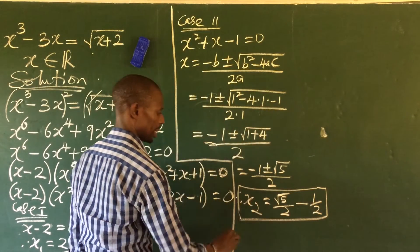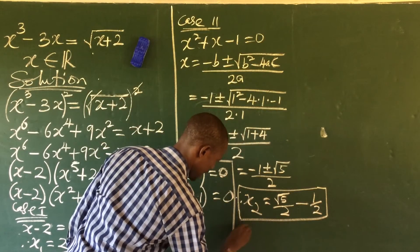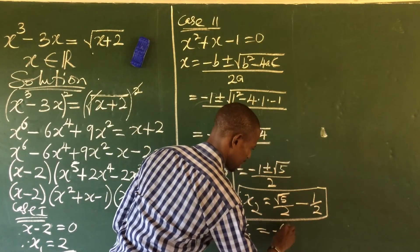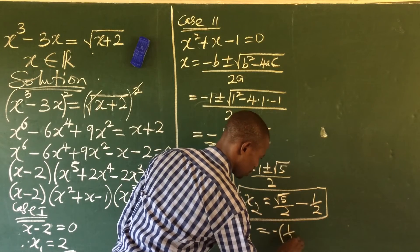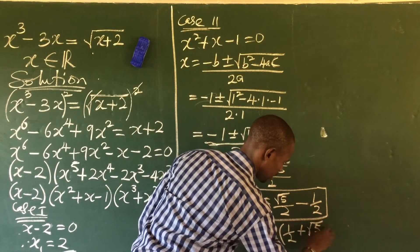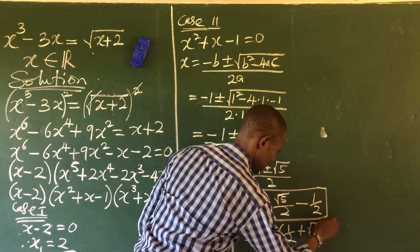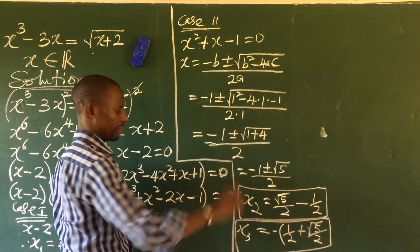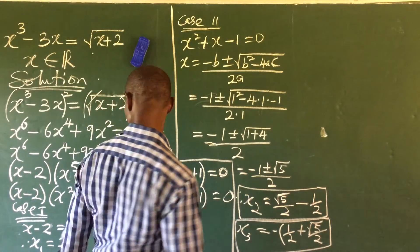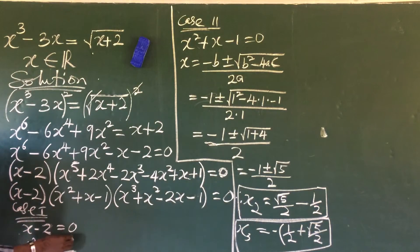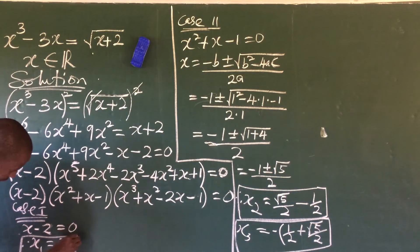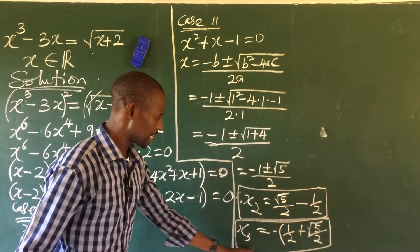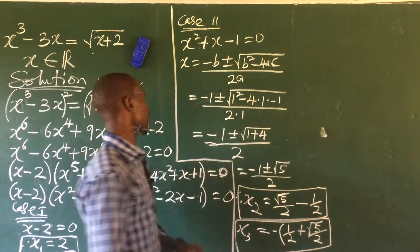So to summarize: x₁ equals two, x₂ equals negative one-half plus root five over two, and x₃ equals negative one-half minus root five over two. These are the three solutions we've found so far.